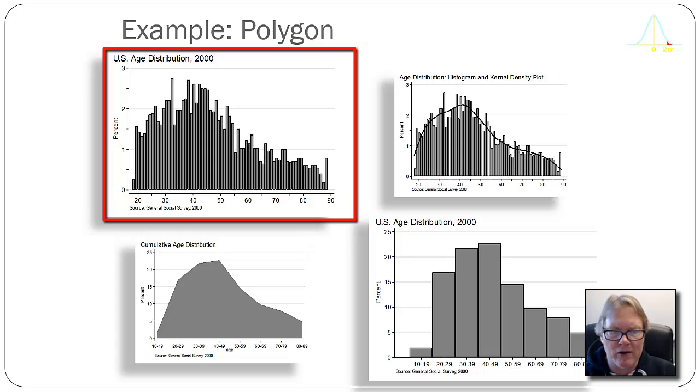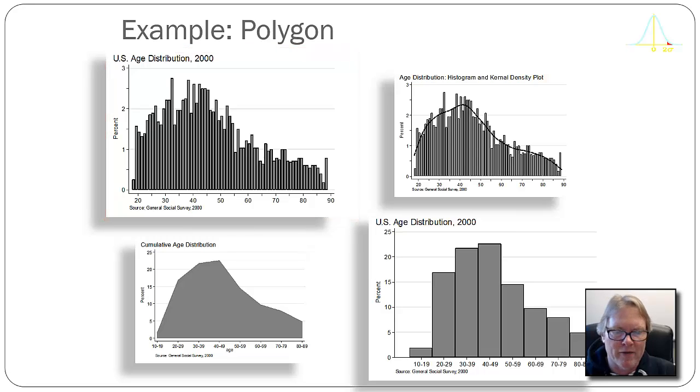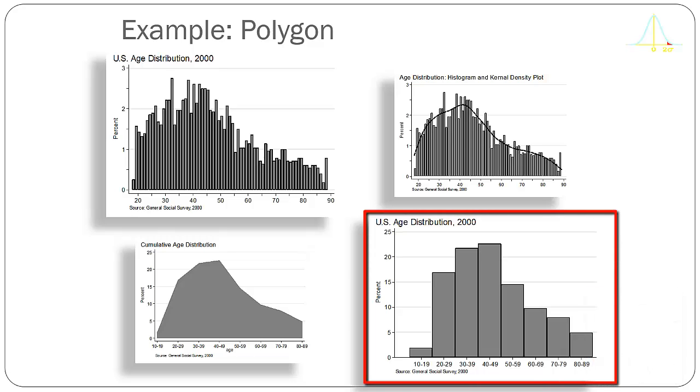There's basically 72 bars there ranging, there's one bar for 18 year olds, one for 19, 20, 21, and so forth up to the 89 year olds. And I don't like this graphic because it's a little too busy. There's too much up and down.